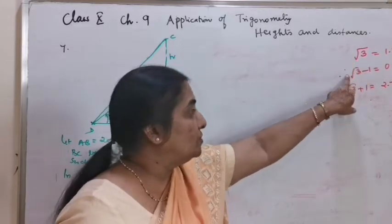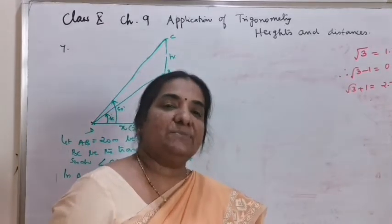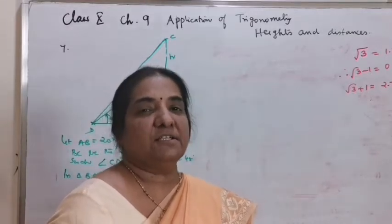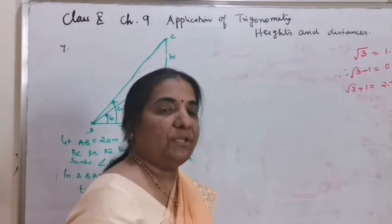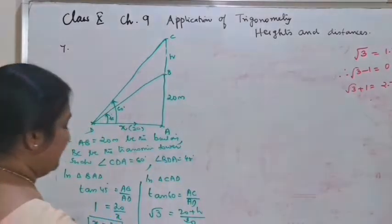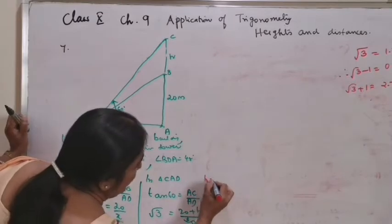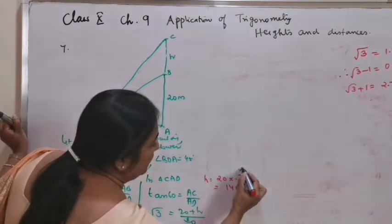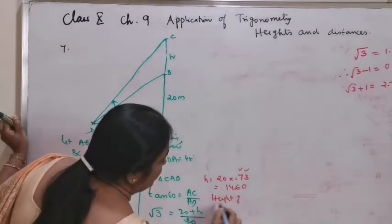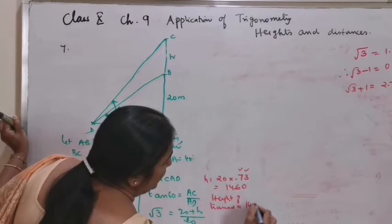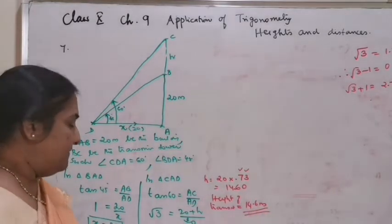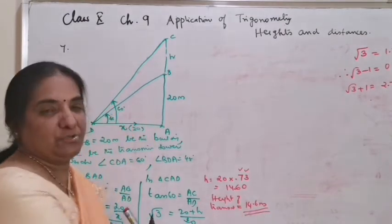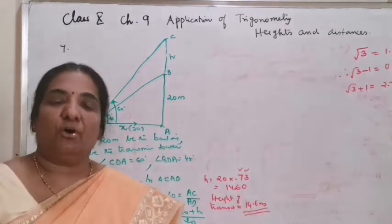In most of your problems, the final answer multiplication will be either with root 3, root 3 minus 1, or root 3 plus 1, because the angles in the textbook are only 30, 60 and 45 degrees. So H equals 20 into 0.73. That is 14.6. Therefore the height of the transmission tower is equal to 14.6 meters. Even if the value is not given for root 3, you can leave the answer with a specific number since you can always multiply with root 3, root 3 minus 1, or root 3 plus 1.